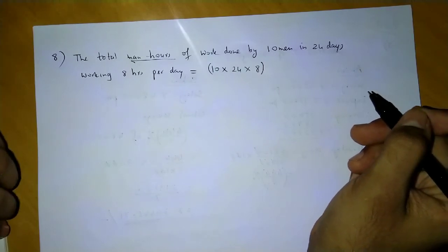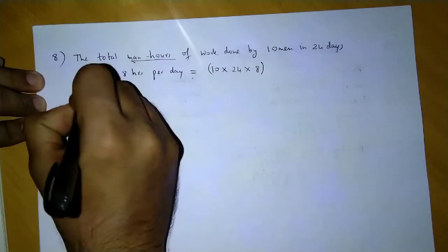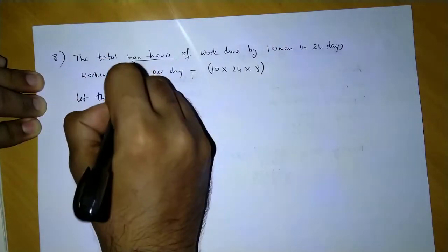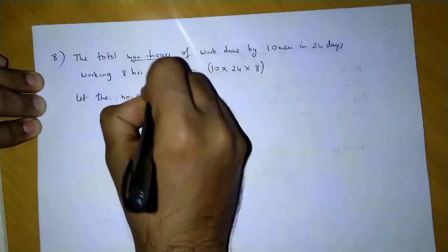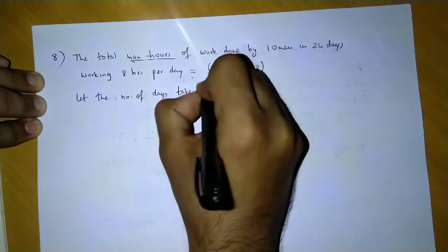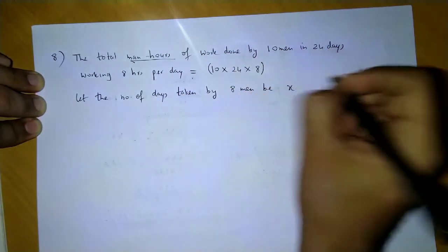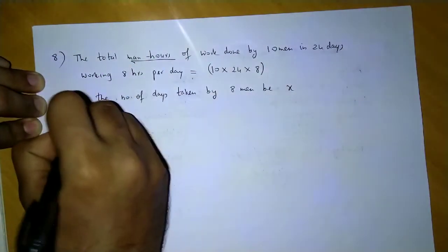Now the second group is given 8 men and 12 hours per day, but the number of days is missing. So we say, let the number of days taken by 8 men be x.